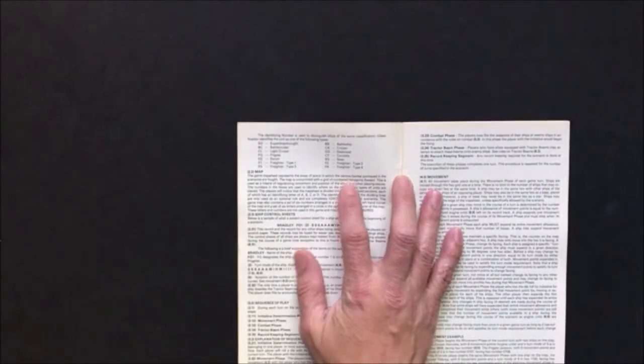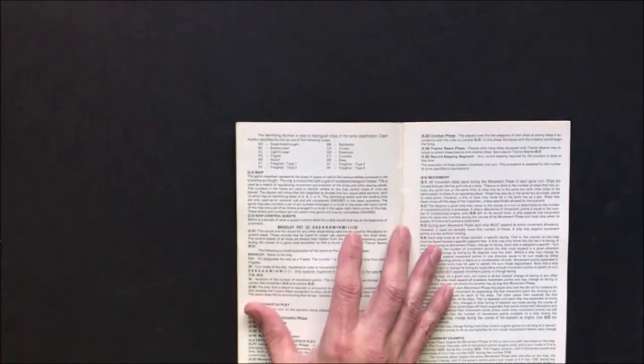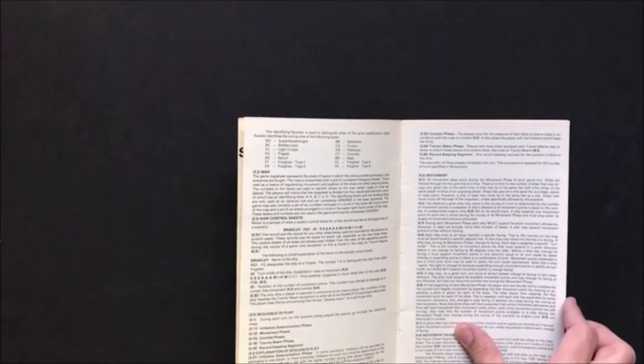They had the whole types of freighters, bases, corvettes, destroyers, cruisers, battleships, escorts, frigates, light cruisers, battlecruisers, super dreadnoughts. But the interesting thing about the game is that you could create your own ships.